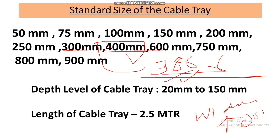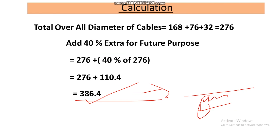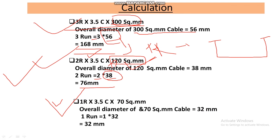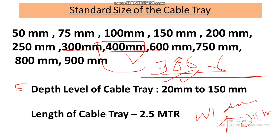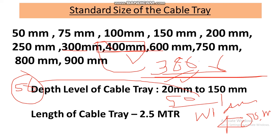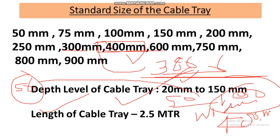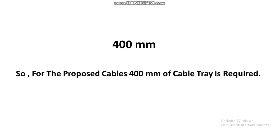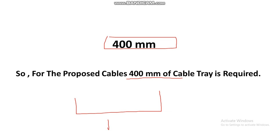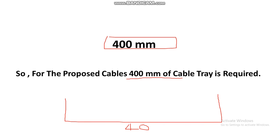The width of the cable tray is 400mm. Now for the depth, we always select based on the largest cable diameter. The highest cable size is 300mm², which has a diameter of 56mm. Looking at the depth size table, the next standard size above 56mm is 100mm, so the depth is 100mm.